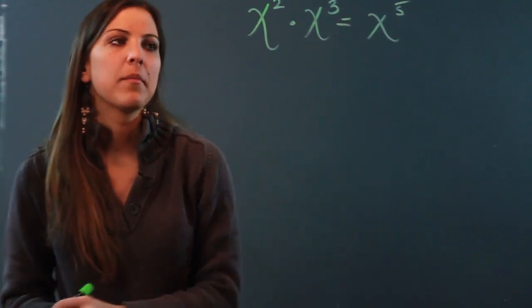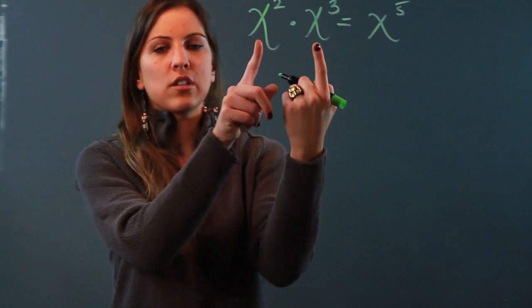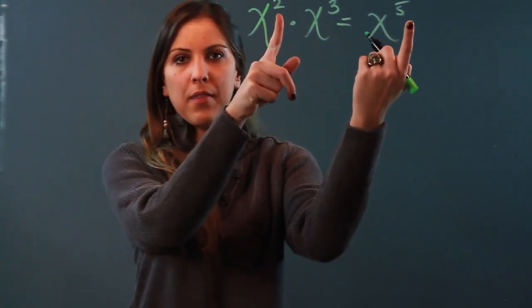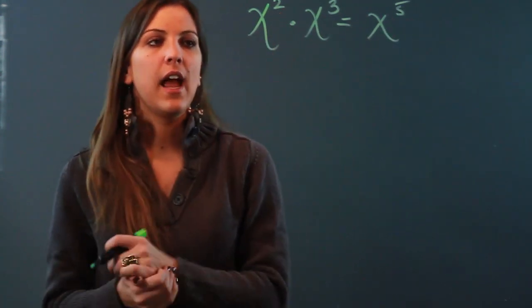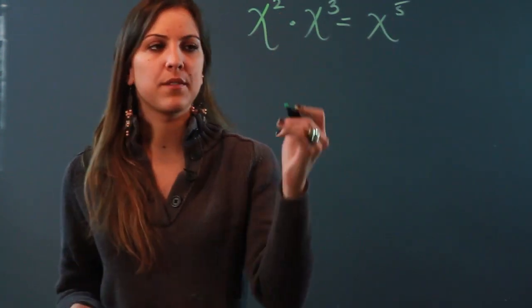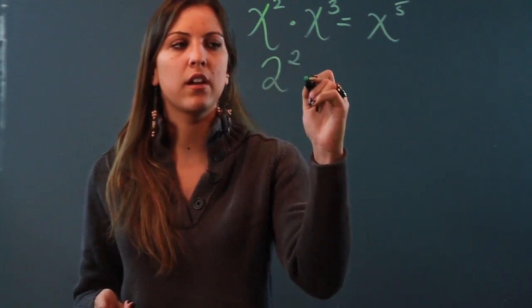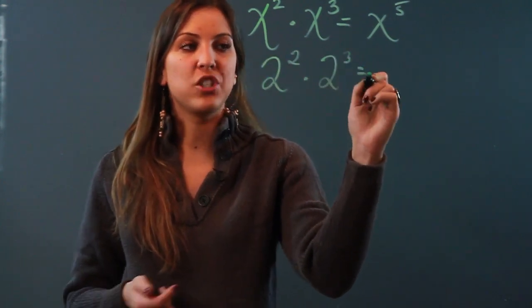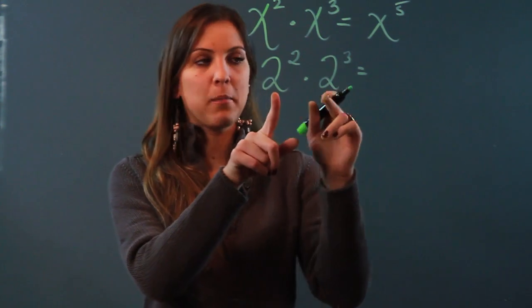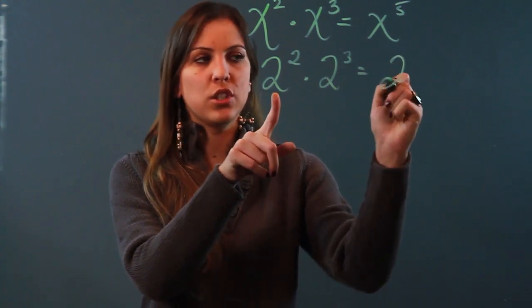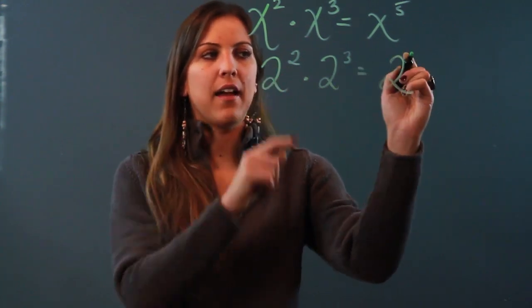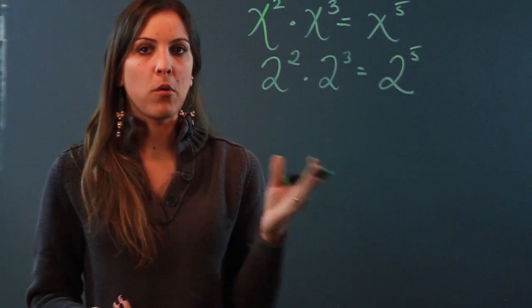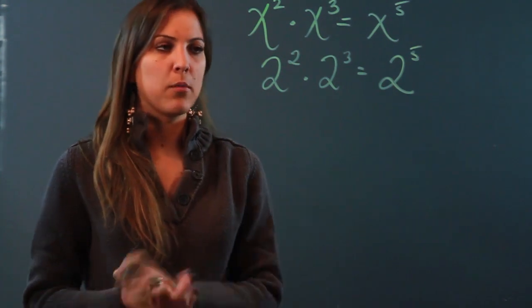So that's our first law: if your bases are the same, you keep the base and you add the exponents. The same thing applies with numbers. So if I had two squared times two cubed, I don't write a four here — I keep the base, which is two, and add the exponents to get two to the fifth. That's your multiplication law of exponents.